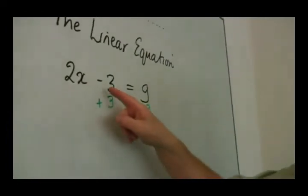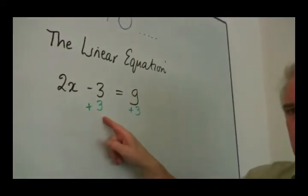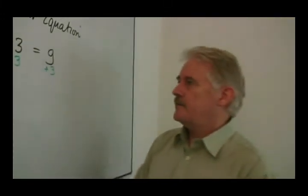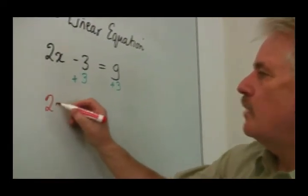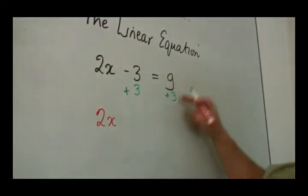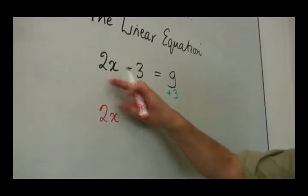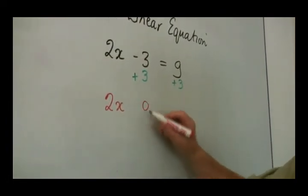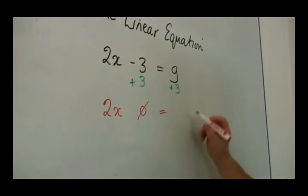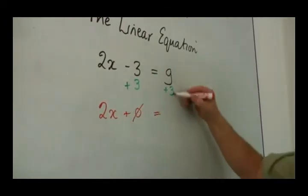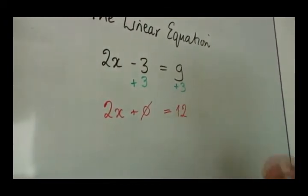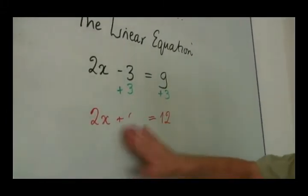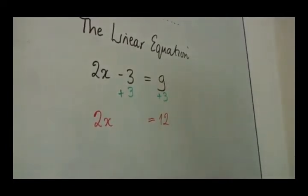Now, 2x minus 3 plus 3: minus 3 plus 3 is nothing. So on the left-hand side I will have just 2x, and on the right-hand side, 9 plus 3. So 2x minus 3 plus 3 equals zero, I don't need it. Equals 9 plus 3, which is 12. I can get rid of that — I don't need it now, it just confuses things.